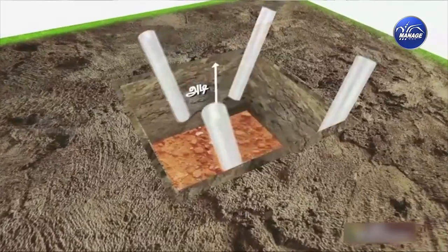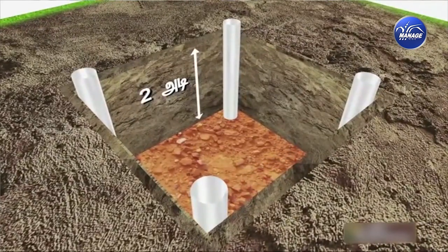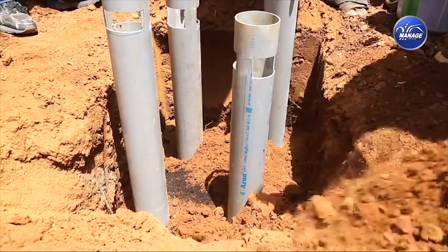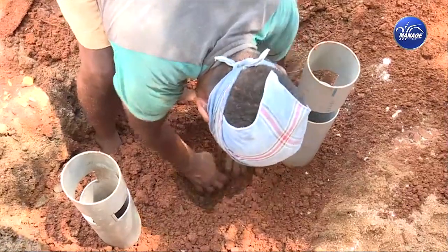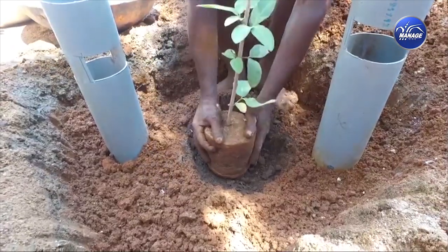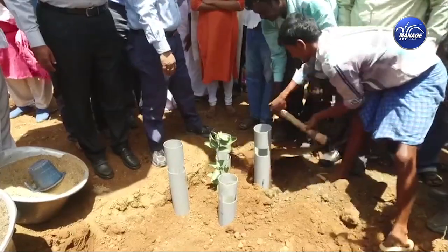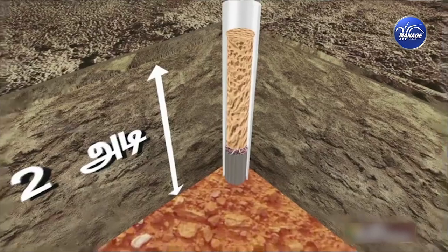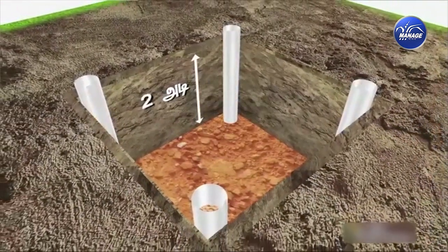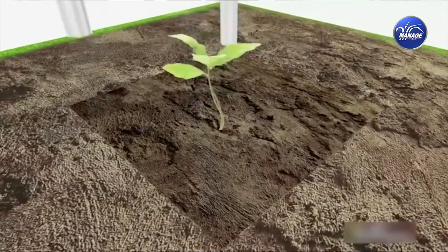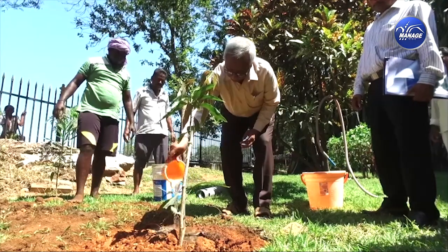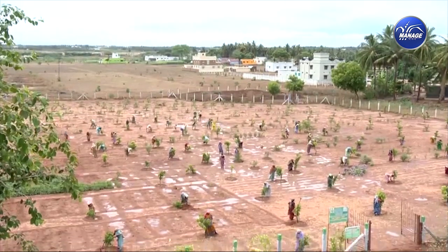Four PVC pipes with four-inch diameter are placed above the holes in the pit. Sieved vermicompost or organic manure is mixed with the dugout soil, and three-fourths of the pit is filled. A small pit is made and filled with two handfuls of unsieved vermicompost or organic manure, and the sapling is planted. The pit is then fully covered. Two handfuls of sieved vermicompost are poured into the PVC pipes, which are then filled with river sand or other water-absorbing material. All four PVC pipes are carefully removed and the sapling watered — the water percolates down and keeps the root zone always moist.